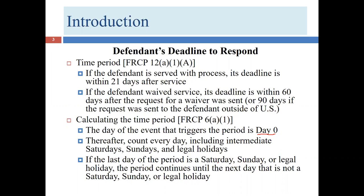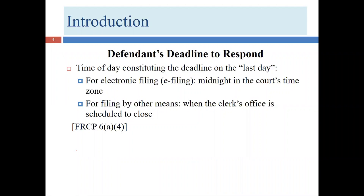The only exception is if the last day in the cycle falls on a Saturday, Sunday, or legal holiday—then we keep skipping ahead until we reach the next day the courthouse is open. So if the last day is a Saturday, we go to Sunday; can't file Sunday, so we go to Monday; if Monday is a legal holiday, then we move to Tuesday. However, Saturdays, Sundays, and legal holidays in the middle of the period do not extend the deadline—only the last day matters.